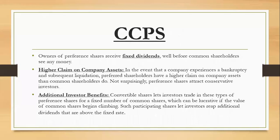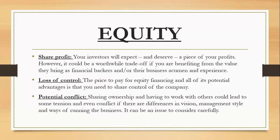Owners of preference shares receive a fixed dividend and come before common shareholders. They have a higher claim on company assets — in bankruptcy or liquidation, preferred shareholders have higher claim. Conservative investors prefer the CCPS route because they have lesser risk compared to equity shareholders, and they receive a fixed dividend with possible additional dividend.